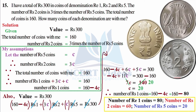Solving the equation: 160 − 4c + 6c + 5c = 300. Combining like terms: −4c + 11c = 7c, so 160 + 7c = 300. Transposing 160 to the right: 7c = 300 − 160 = 140. Dividing both sides by 7: c = 140 ÷ 7 = 20. We have successfully found c equals 20.